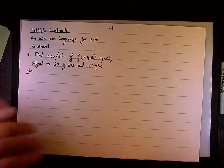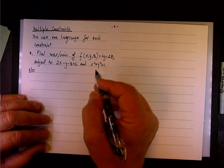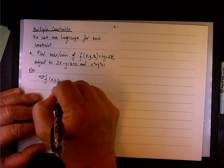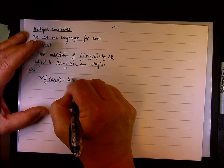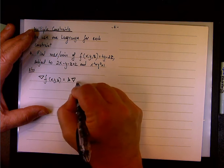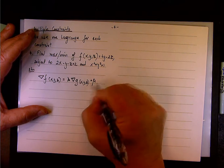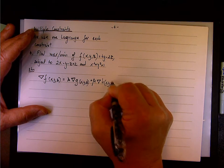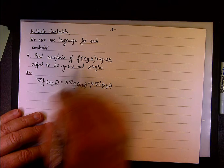The solution: the way we set it up, we set it up with two Lagrange multipliers. We say the gradient of f(x, y, z) equals lambda times the gradient of g, plus another Lagrange multiplier, mu, times the gradient of h(x, y, z), where g equals the first constraint and h equals the second constraint.